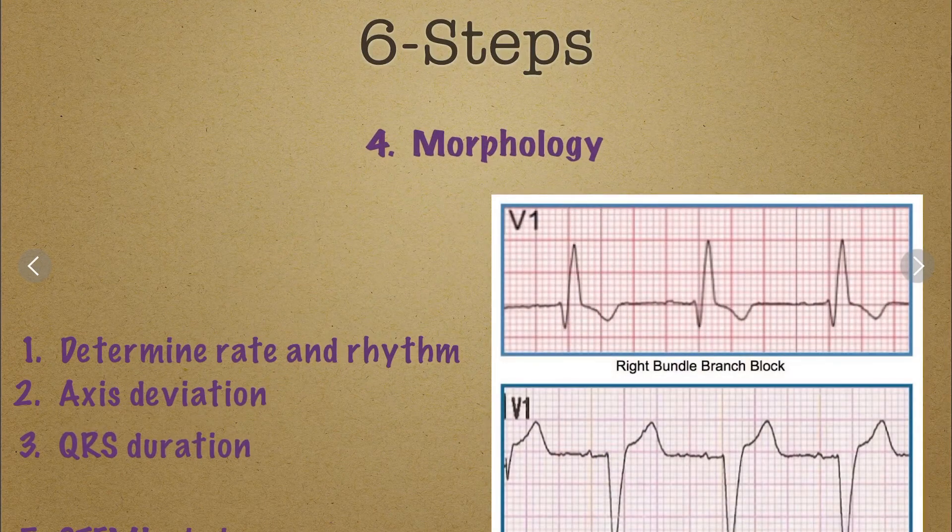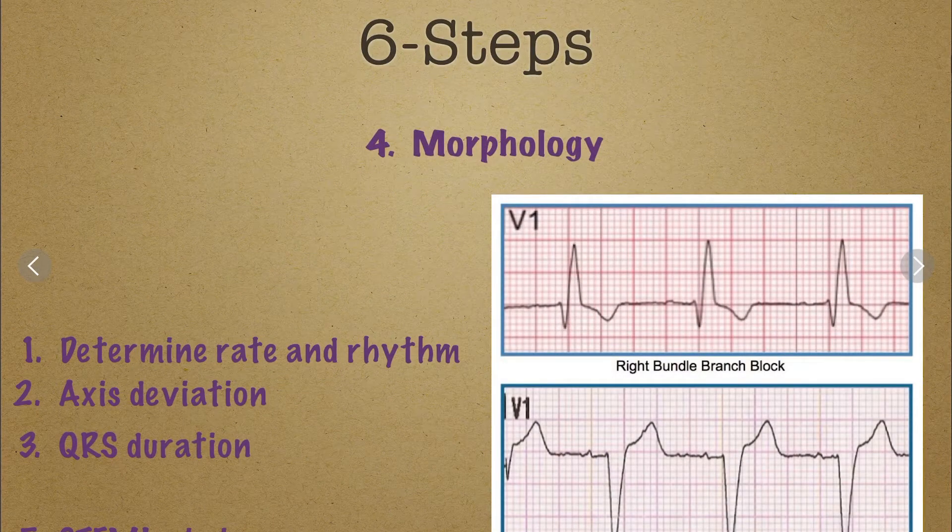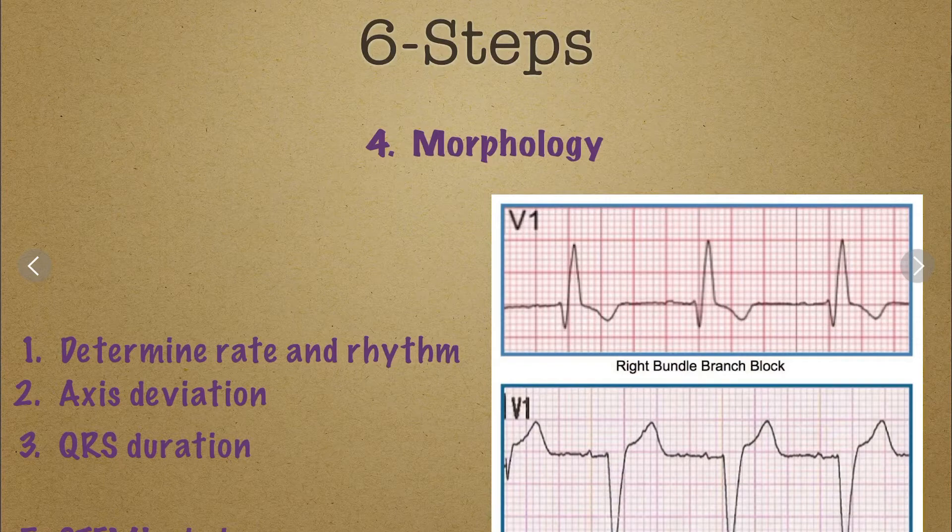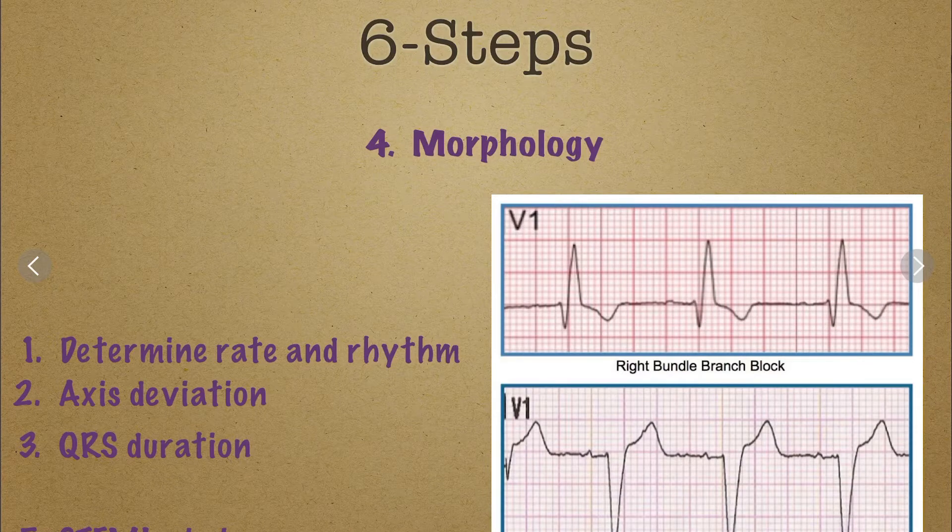And then we look at the morphology and primarily what we're looking at here is we're looking to see if we have a right bundle branch block, left bundle branch block or a hemi block. We talked about that in a previous video. So check to see if you have that. And I put a couple up there just for reference to look at.